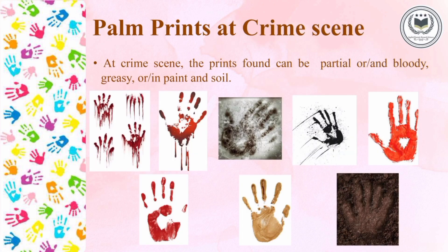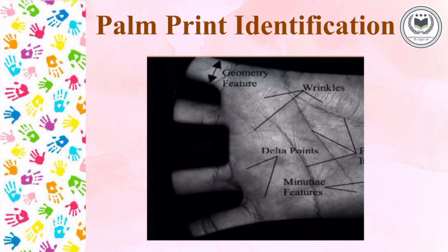When we go to any crime scene, we can find partial prints or chance prints. As you can see in the picture, the first three pictures are of bloody prints. The next two pictures are of greasy prints. The last one in the first line is with paint. Below that there are two pictures of soily prints, one of which is in the soil — a 3D print.